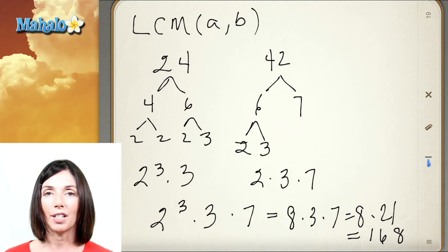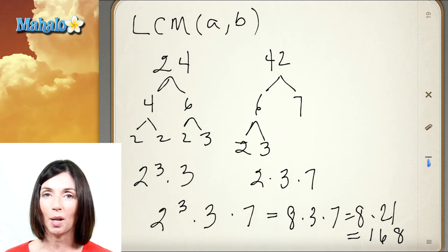So you can use prime factorizations to help you find the least common multiple of any two numbers.